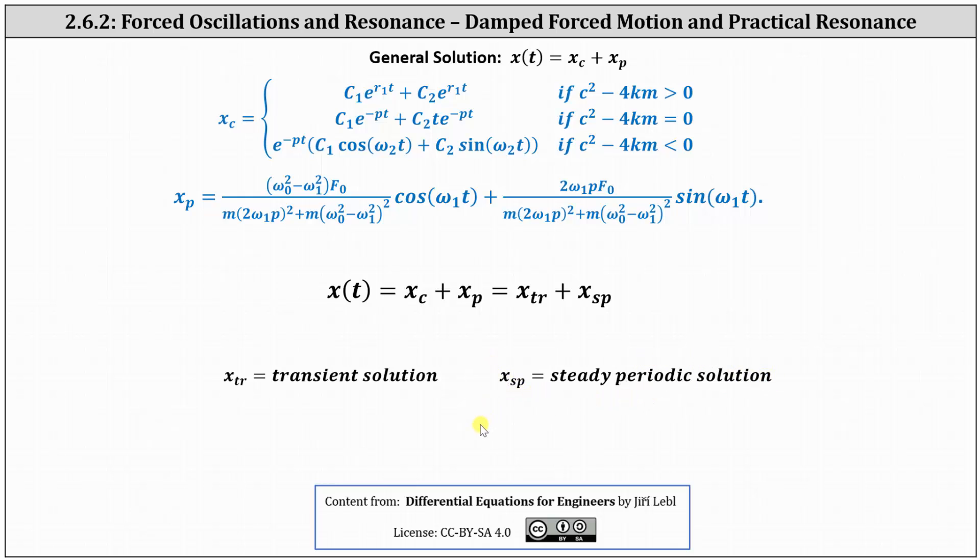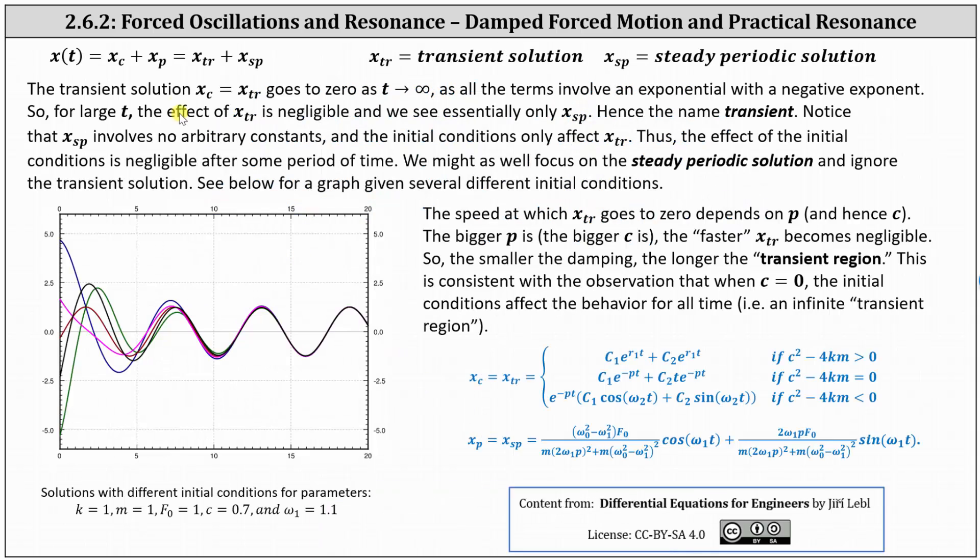Let's talk about why this is. The transient solution x_tr goes to zero as t approaches infinity, as all the terms involve an exponential with a negative exponent. Looking at the three possible forms for the transient solution, even when we have the first form, r_1 and r_2 will always be negative, which is why the transient solution goes to zero as t approaches infinity.